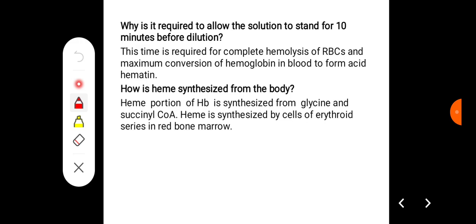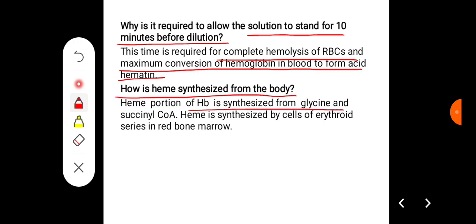Why is it required to allow the solution to stand for 10 minutes before dilution? This is the time required for complete hemolysis of RBC and the maximum conversion of hemoglobin in blood to form acid hematin. How is heme synthesized in the body? Heme portion of hemoglobin is synthesized from glycine and succinyl-CoA. Heme is synthesized by the cells of erythroid series in red bone marrow.